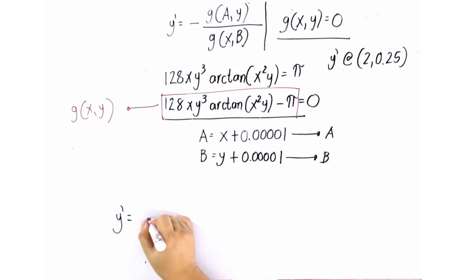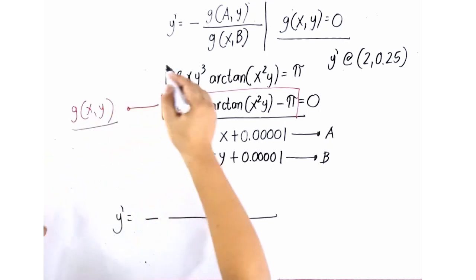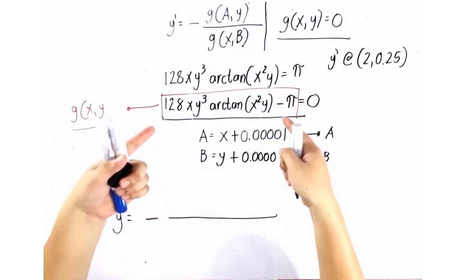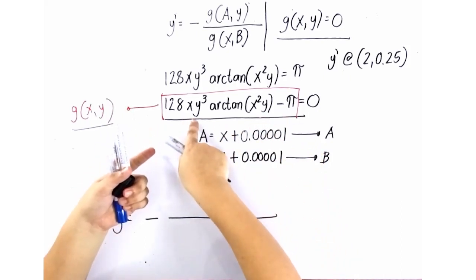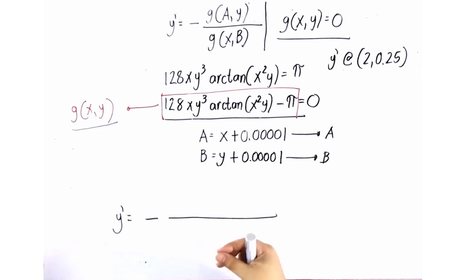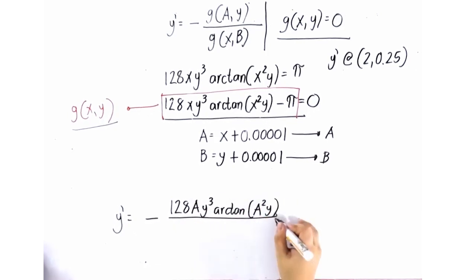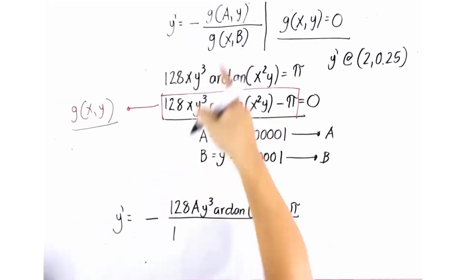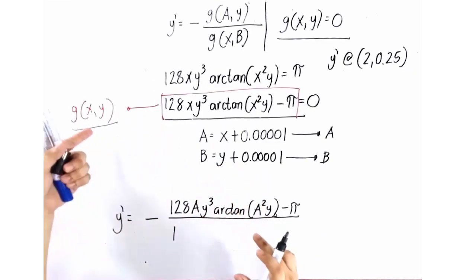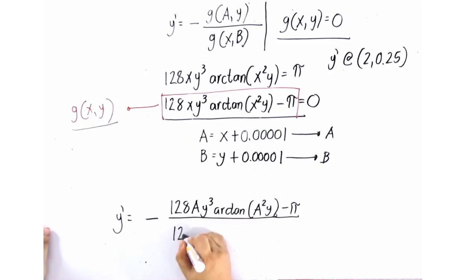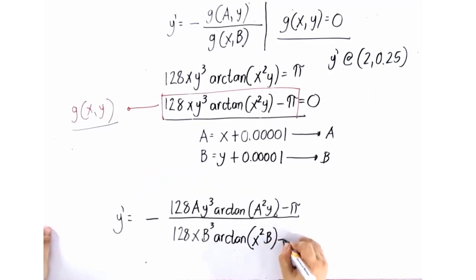You can now do this one. Negative g of A, y over g of x, B. As you can see here, this is our g of x, y. And we replace x by A. So meaning in this equation, all of the values of x here, all x here in the function will be replaced by letter A. So this one will become 128 A, y cubed, arctan, a squared, y, minus pi. Look at this. This is g of x, B. So what does it mean? You type it again, but you're going to replace all variable y by letter B. So that would be 128 x, B cubed, arctan, x squared, B, minus pi.